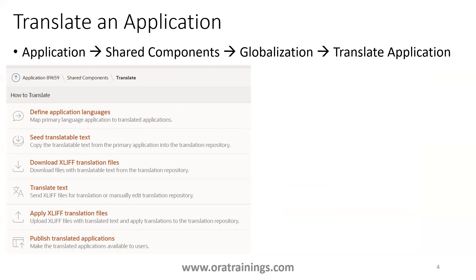Then you have to click on 'seed translatable text.' For all the column names that you want to change to Hindi, it will download those items — you download the XLIF translation files. Once downloaded, you replace the English text with the appropriate Hindi text value. If your destination language is Swedish, you mention the appropriate Swedish text. Then once you apply the XLIF files, you publish the application. When you run the application, you will see it in the different language.